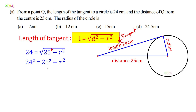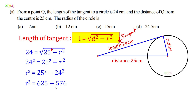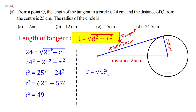Transposing: r² = 25² − 24². Calculating: 25² = 625 and 24² = 576. So r² = 625 − 576 = 49. Therefore r = √49 = 7. The radius r = 7 centimeters. So option A is the right answer.